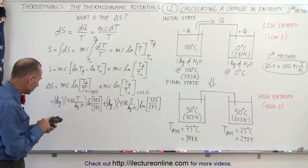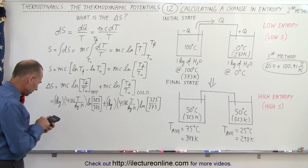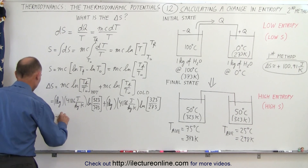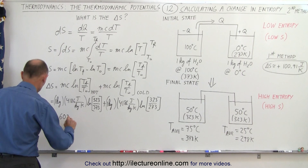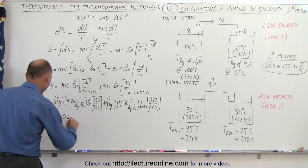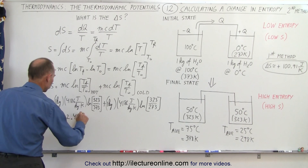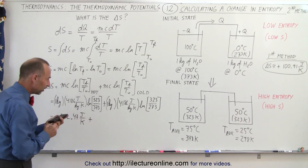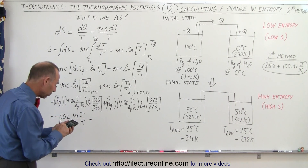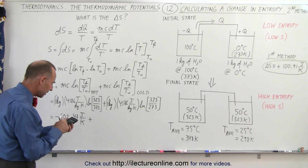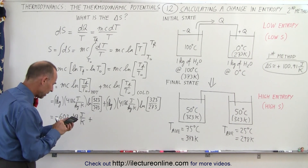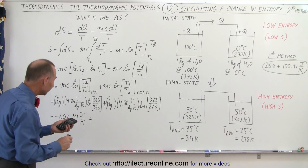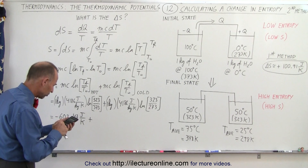Calculating 323 divided by 373, taking the natural log, and multiplying by 4186, we get minus 602.47 joules per kelvin. For the second portion: 323 divided by 273, taking the natural log, and multiplying by 4186 gives us 704.00 joules per kelvin.